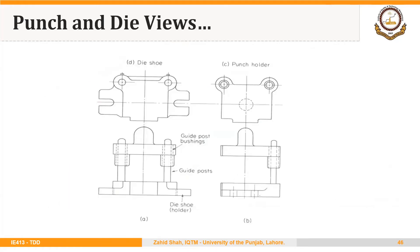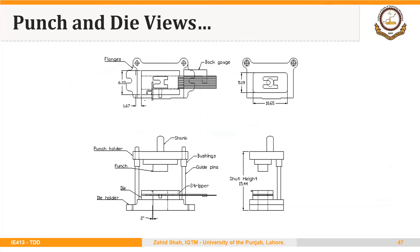We need to draw these views on the standard layout discussed in the last lecture. On the top right we have the view of the blanking punch. On the top left we have the blanking die showing the die opening. The strip being fed is shown, along with the back gauge and front spacer. At the bottom left we have the front view of the punch and die.